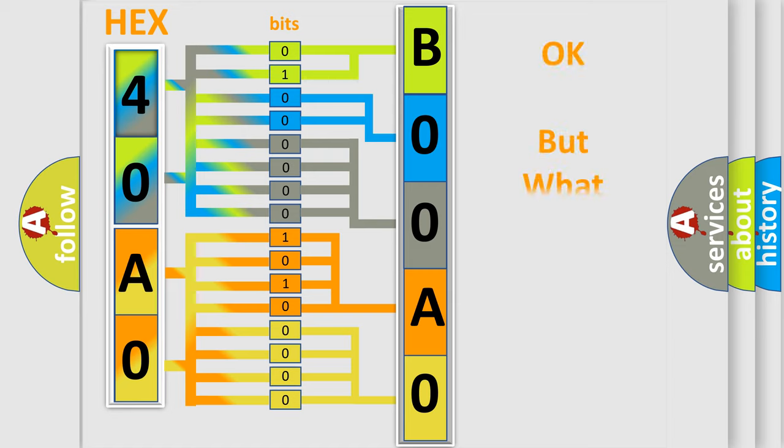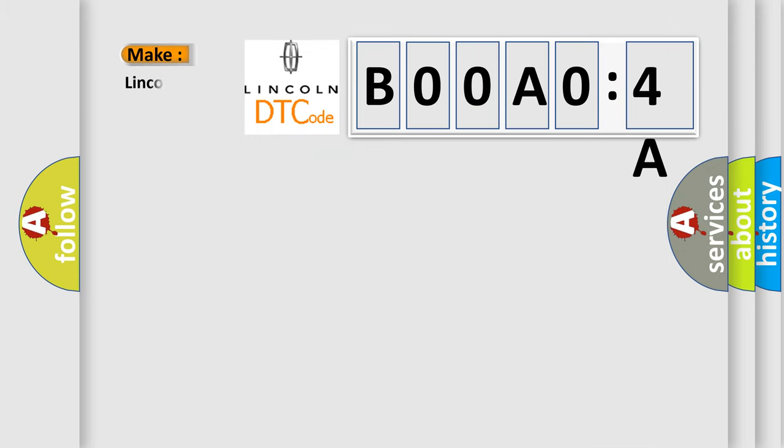We now know in what way the diagnostic tool translates the received information into a more comprehensible format. The number itself does not make sense to us if we cannot assign information about what it actually expresses. So, what does the Diagnostic Trouble Code B00A04A interpret specifically?